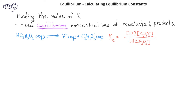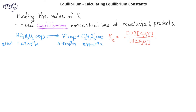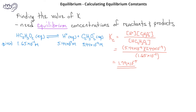In this problem, given the equilibrium values of 1.65 × 10⁻² M for acetic acid, and 5.44 × 10⁻⁴ M for both the hydrogen ion and the acetate ion, when we plug those into the equilibrium constant expression, we find that the equilibrium constant for the solvation of acetic acid has a value of 1.79 × 10⁻⁵.